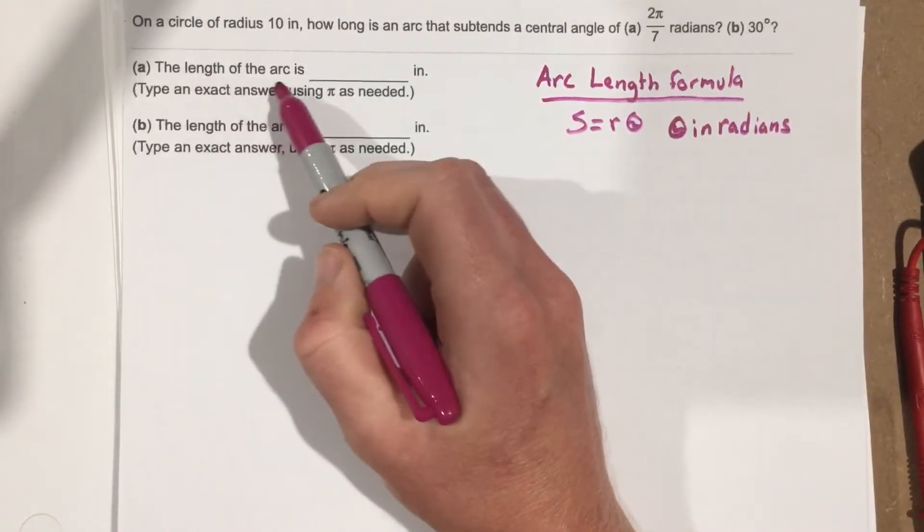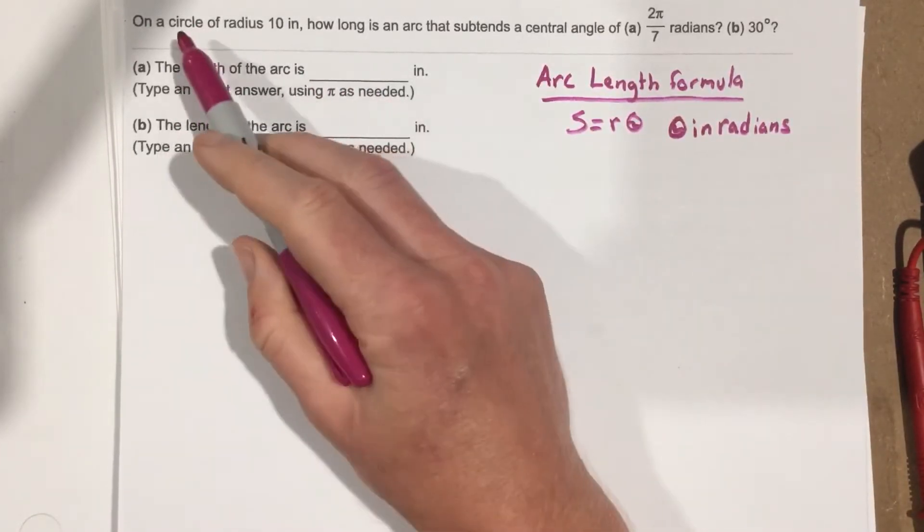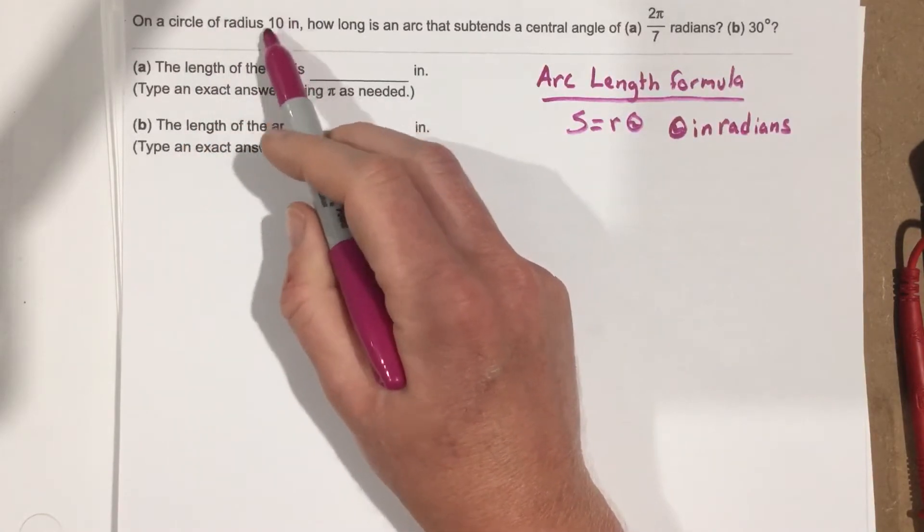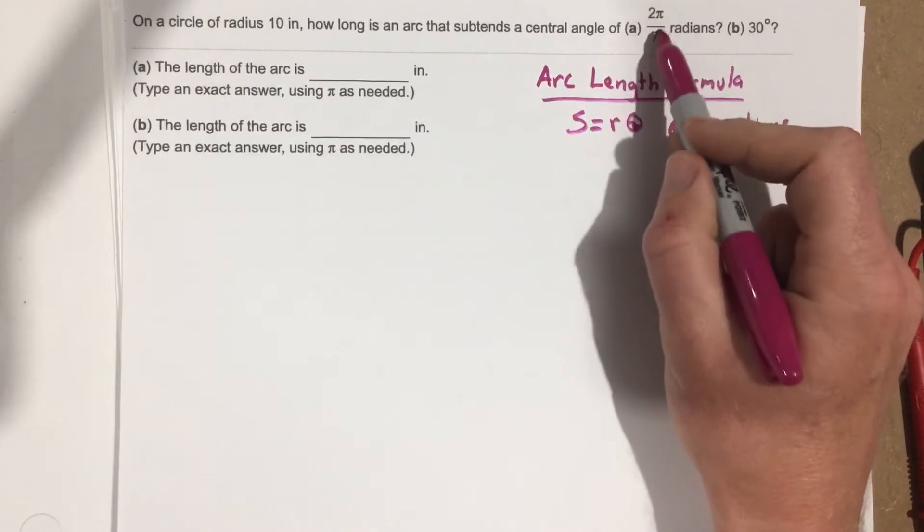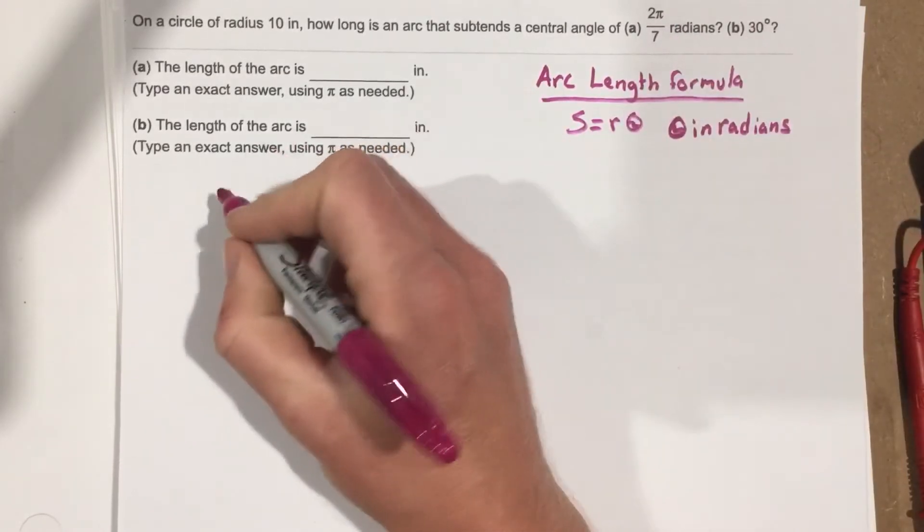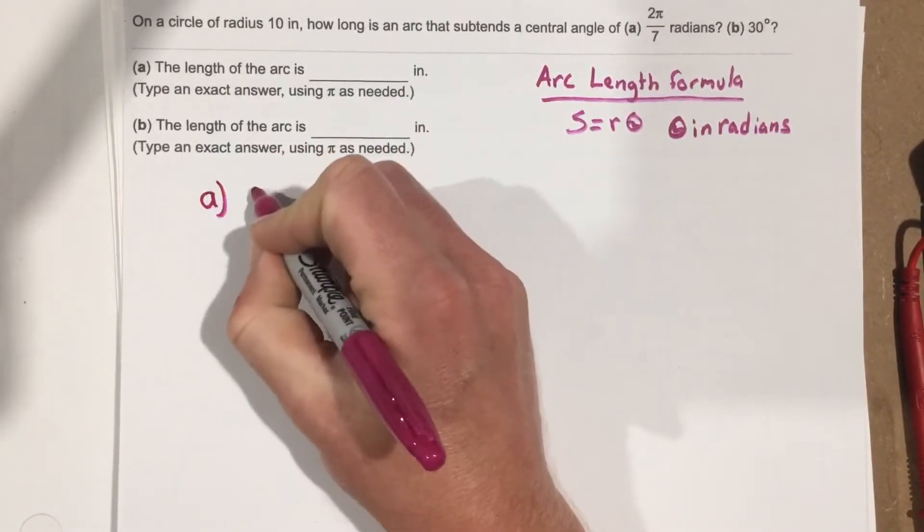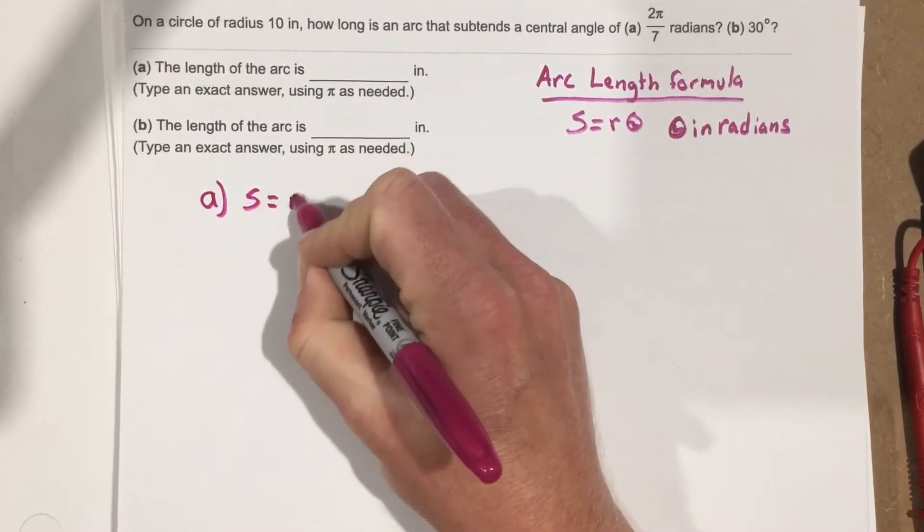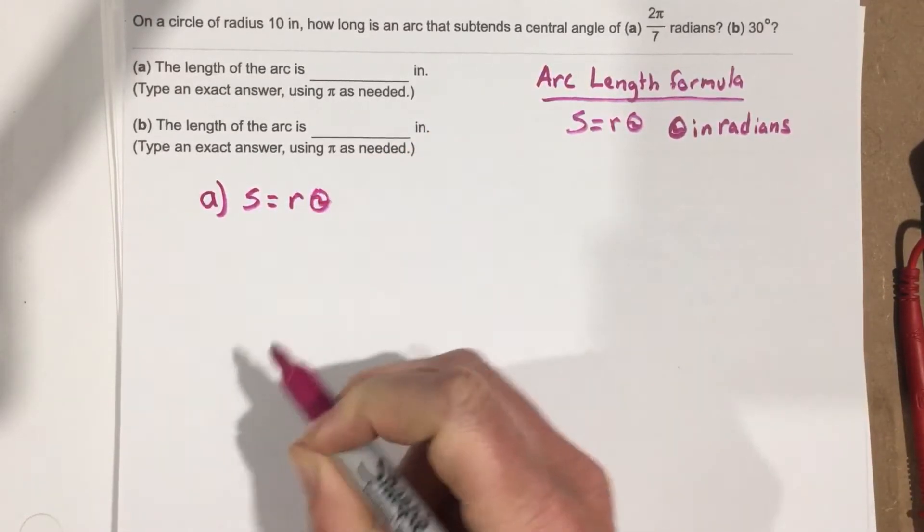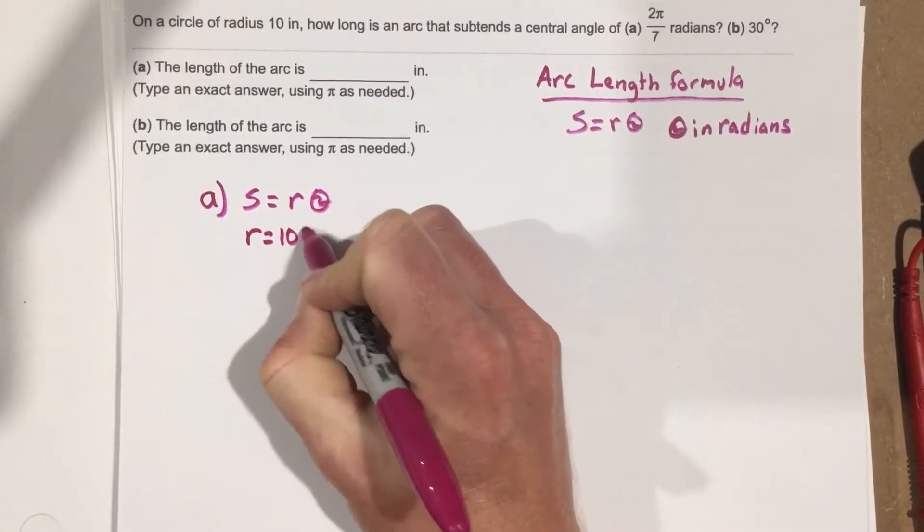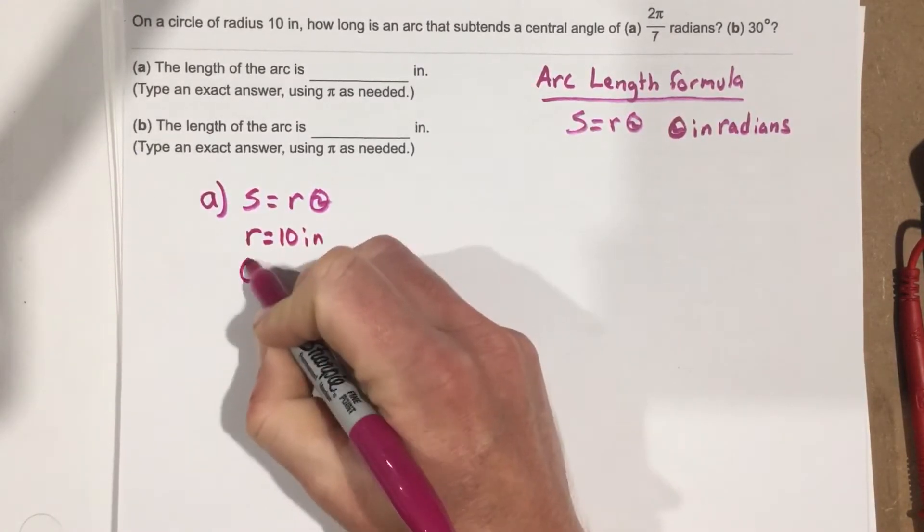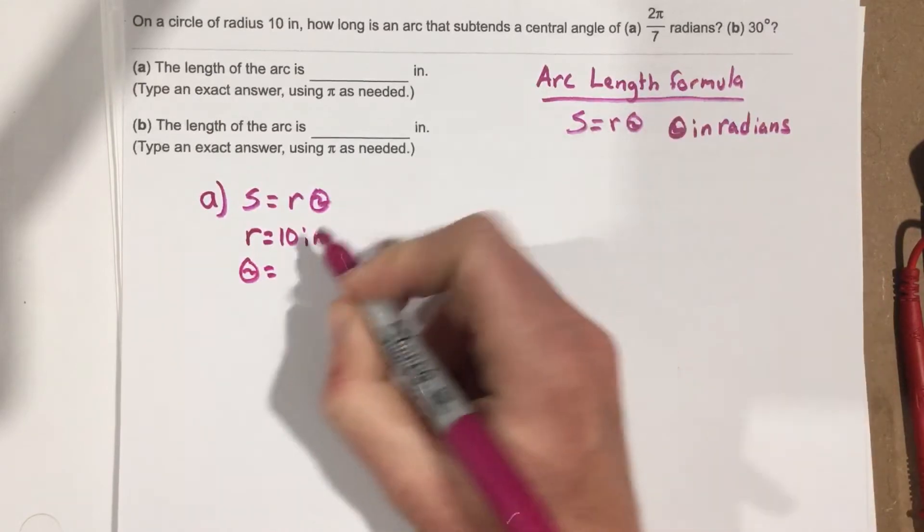So it says the length of the arc is blank inches. Well, they give us a radius of 10 inches, and then they give us an angle in part A for 2π over 7. So here's what we do. We take S equals R theta and we plug in what we know. So we know that the radius is 10 inches. We know that theta is 2π over 7.